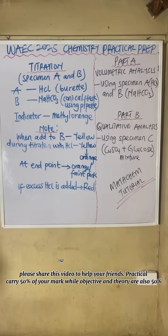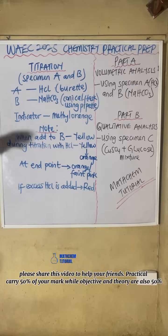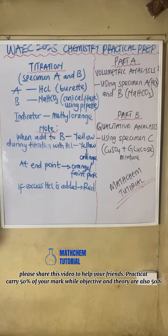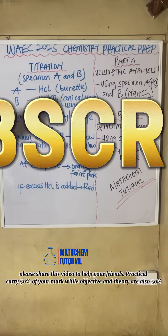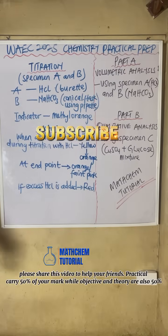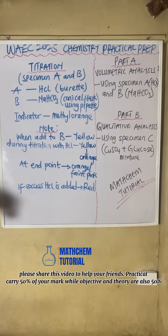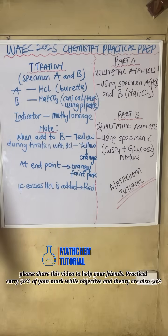We are looking into the Y25 chemistry practical. Part A is volumetric analysis, also known as titration. We are given specimen A and specimen B. Specimen A is hydrogen chloride — a strong acid. Specimen B is sodium hydrogen carbonate.